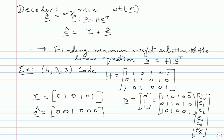So C-hat equals R plus E-hat: flip the third bit of R to get [0,1,1,1,0,1]. That has to be a codeword. This is how syndrome decoding works — try weight zero, then weight one, and stop when you find a solution.